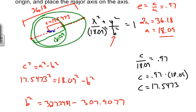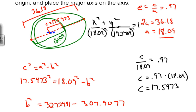So I'll take that b squared value and put it up here and find our final equation for Halley's Comet going around the Sun: x squared over 18.09 squared plus y squared over 19.3404 equals one. And that is our equation.